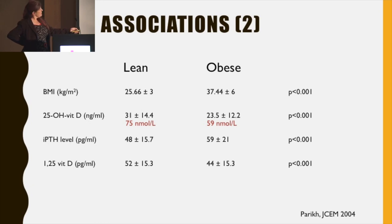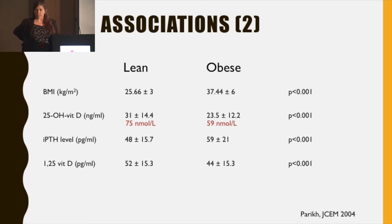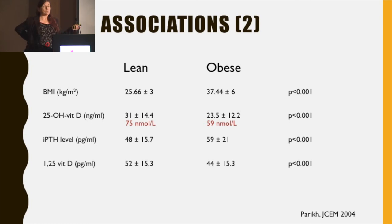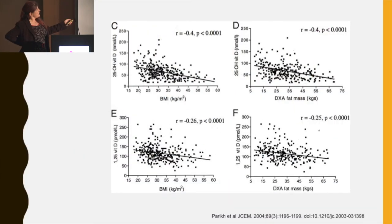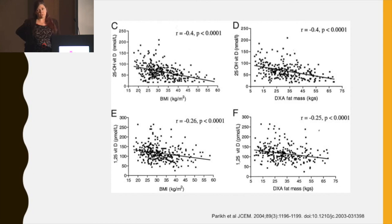In American and Australian European units, you can see that lean people tend to have higher 25-vitamin D than the obese group. This corresponds to parathyroid hormone levels, which are lower in the lean group than the obese group — they're having to raise their parathyroid hormone levels, presumably to maintain serum calcium. In this study they've also measured 125D, which has a very similar proportional change. The correlation is loose but convincing, and much less tight for 125D, which reflects that we don't usually use this as the biomarker for adequacy of status.